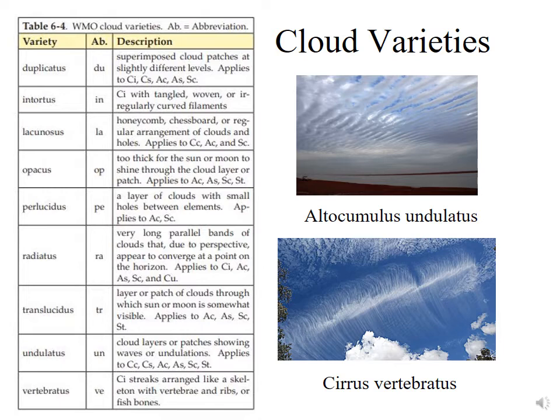Down below at the bottom right, we have an example of cirrus vertebratus, where it kind of looks like a backbone with ribs — a skeleton with vertebrae, ribs, or fish bones. That's an example of a cloud variety.